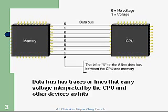The data bus has traces or lines that carry voltage. These voltages are interpreted by the CPU and other devices as bits. As a bit moves along, it will either be high or low — that's a different voltage level. If it's high, or one, that voltage is generally around five volts. This is how bits are interpreted.